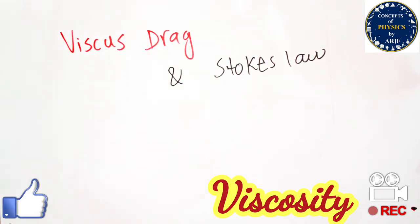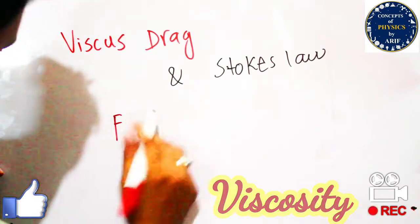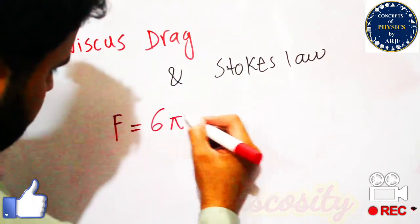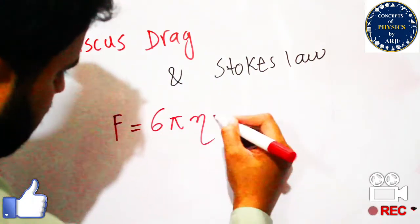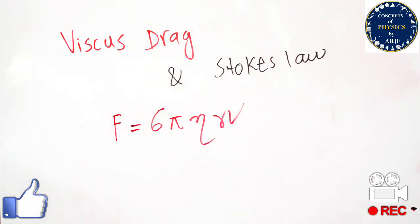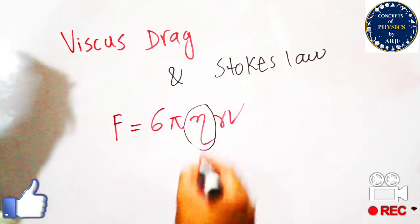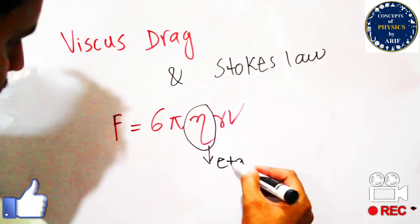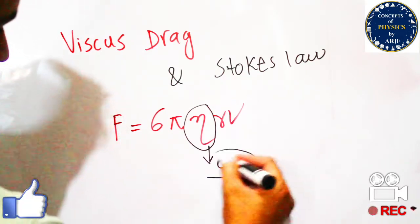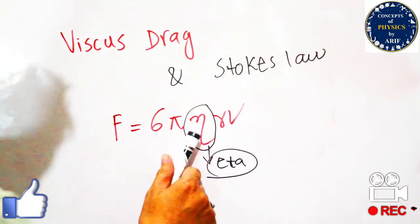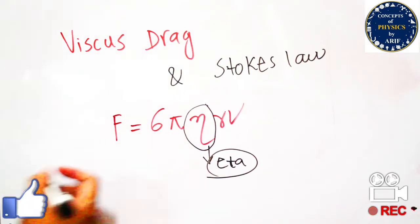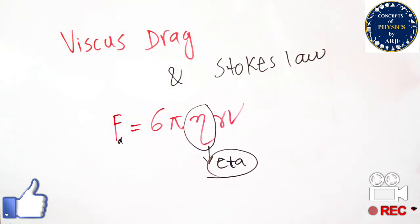The drag force is dependent on the coefficient of viscosity as well as the velocity of the object. We can write the drag force as equal to 6πηrv, where eta (η) is the coefficient of viscosity — this is the Greek letter eta. This expression gives us the drag force.